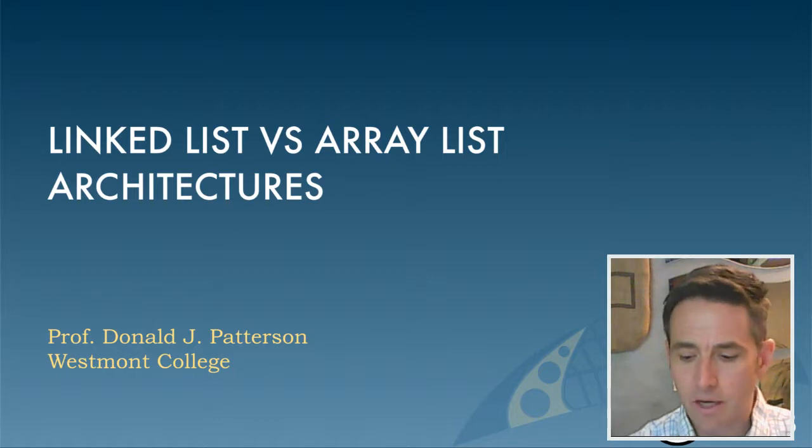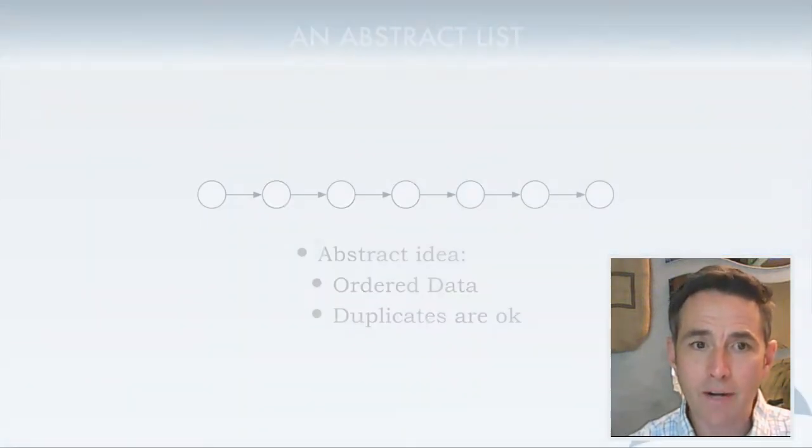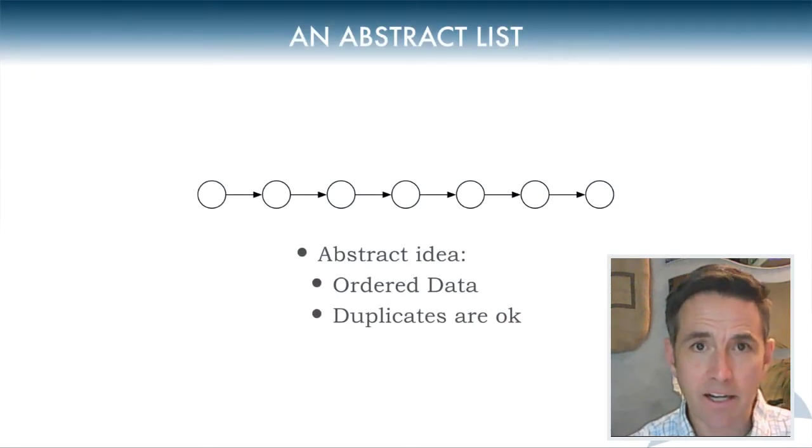So the first thing to do is to identify what are the properties of a list in general. Well, abstractly a list is a collection of items that are ordered linearly. This is a kind of collection in which the order of the data is important. The order of the first one versus the second one is something that you want the data structure to maintain. It's also okay to have duplicate data elements in this collection.